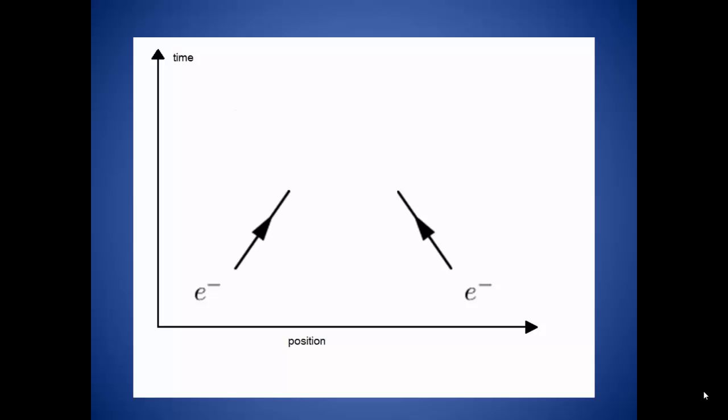In this diagram, as time increases, the two electrons are getting closer to one another. As the electrons get closer to each other, one of them will begin to release energy in the form of a photon.